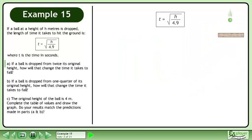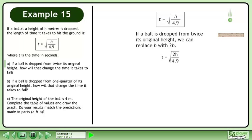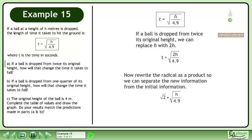Rewrite the equation. If a ball is dropped from twice its original height, we can replace h with 2h. This gives us t equals the square root of 2h over 4.9. Now rewrite the radical as a product so we can separate the new information from the initial information. This gives us the square root of 2 times the square root of h over 4.9. So it takes root 2 times longer than the original time.